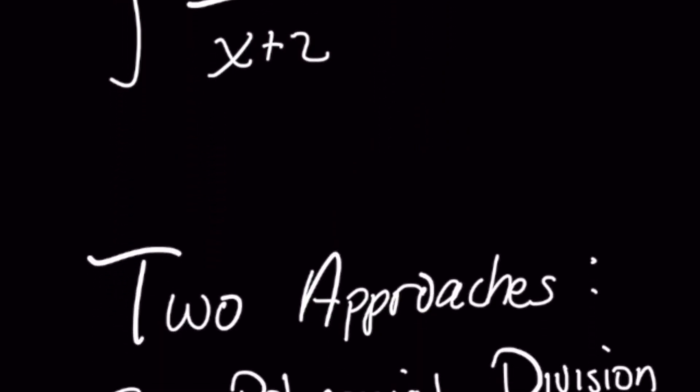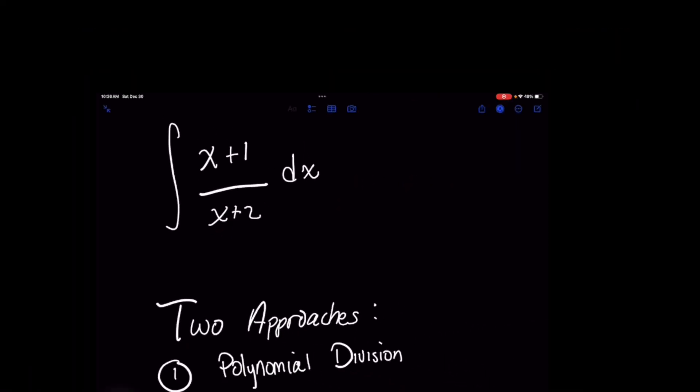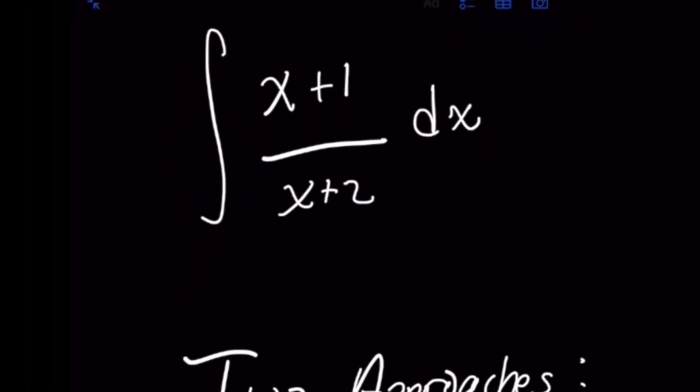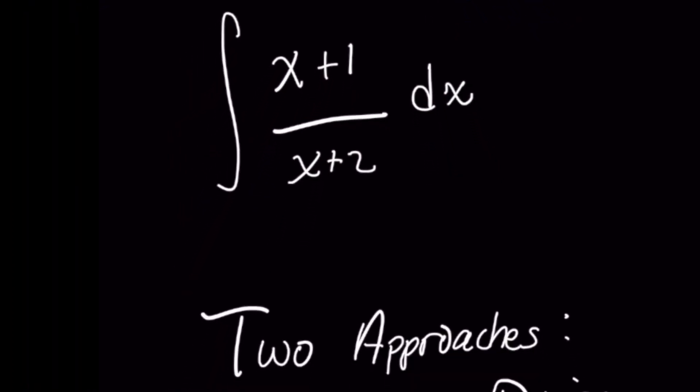Usually when you have division like this, polynomial division is the first step, or long division. It might be called something else, depending on what class you're in. This is where the numerator has a maximum power of x, which is 1, and the denominator has a maximum power of 1. So we would use polynomial division or long division in these cases where the numerator's maximum degree is greater than or equal to that of the denominator.